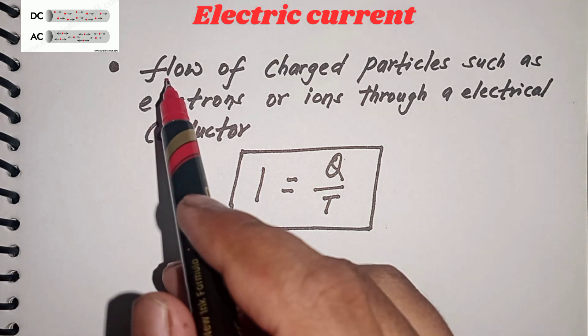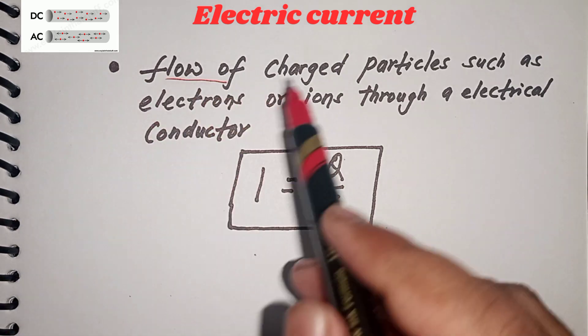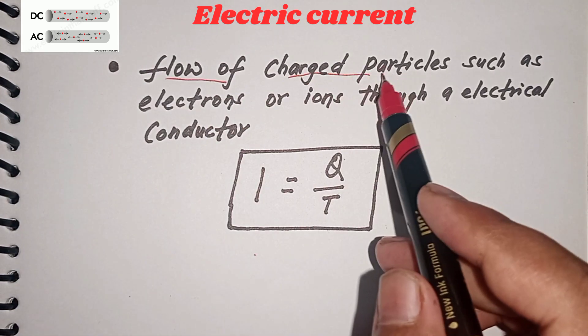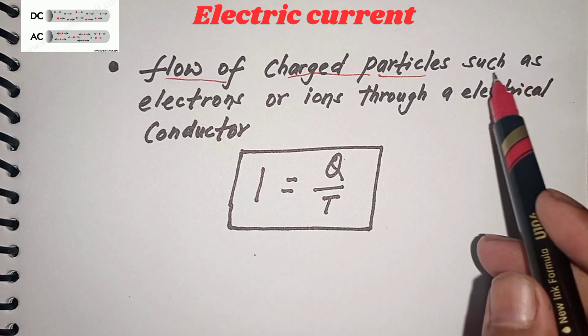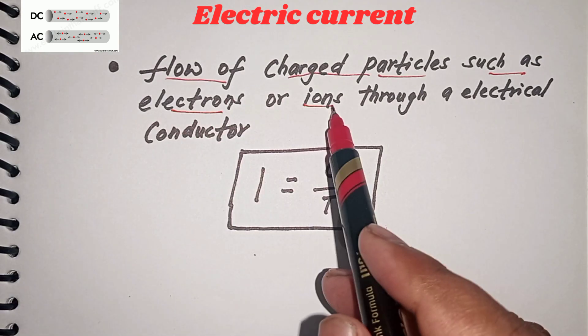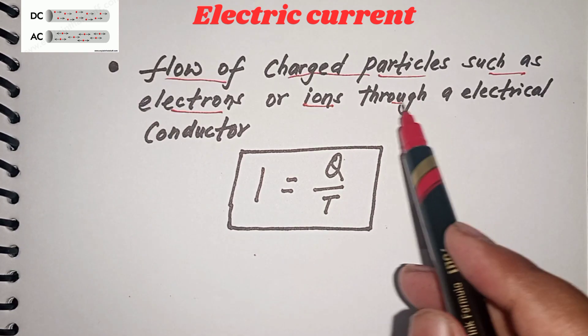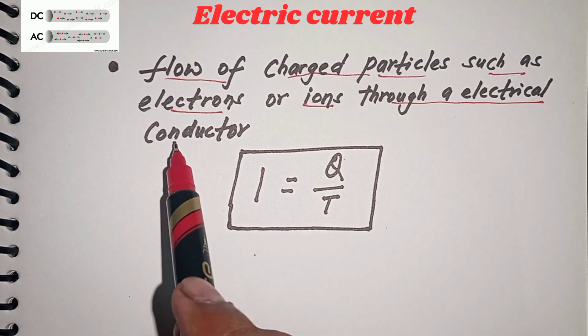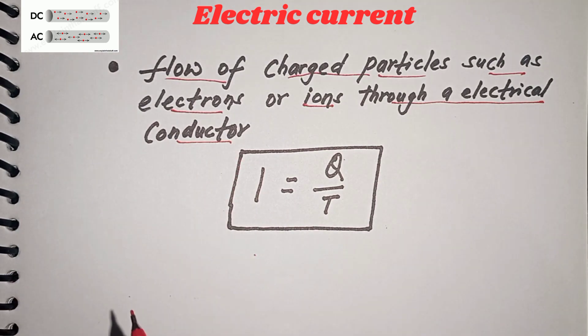Electric current is defined as a flow of charged particles such as electrons or ions through an electrical conductor.